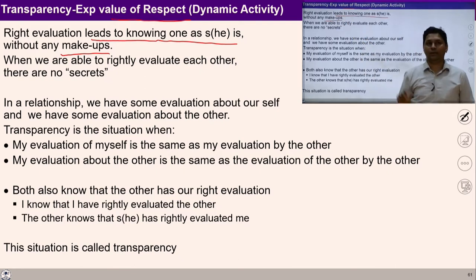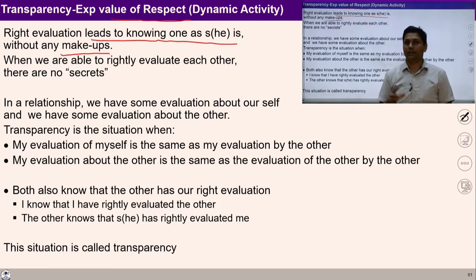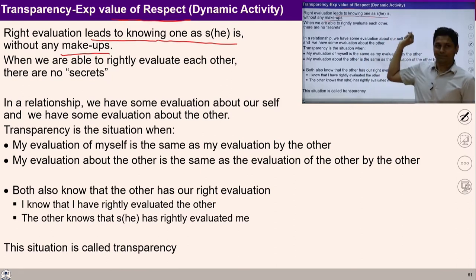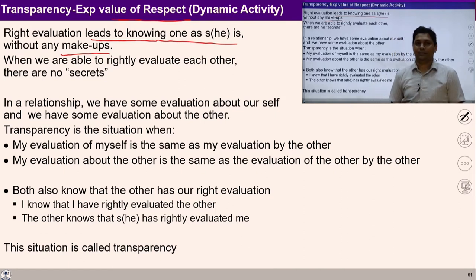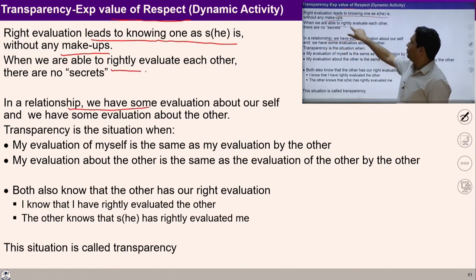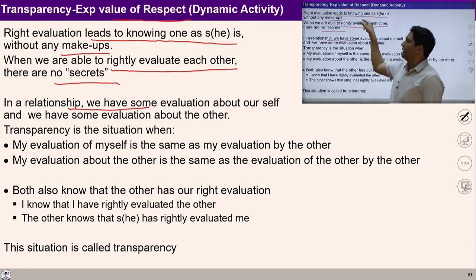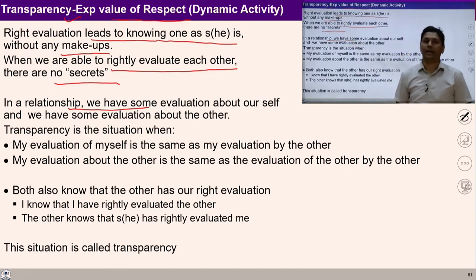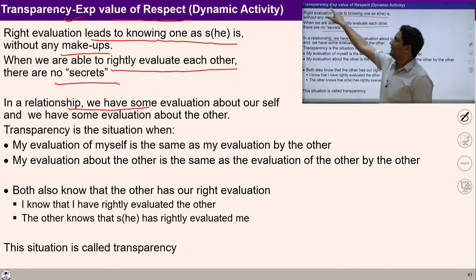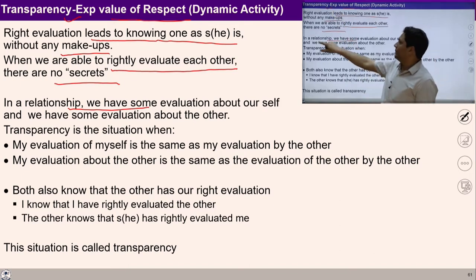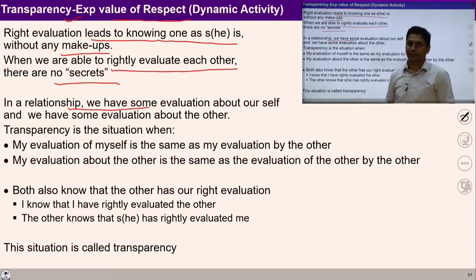Transparency is the situation when my evaluation about myself is the same as the evaluation of me by others. Once I evaluate the other and the other knows about himself as I evaluated him, it is transparency. In relationship, we are able to rightly evaluate each other — there is no secret, no miscommunication, no misunderstanding. What I know about you, you also have evaluated about yourself. Transparency takes place when the evaluation of both people happens in the same manner.